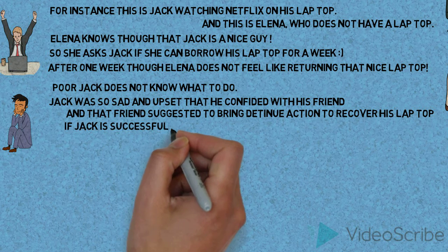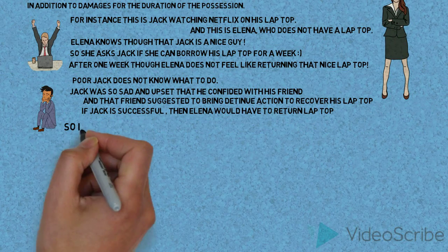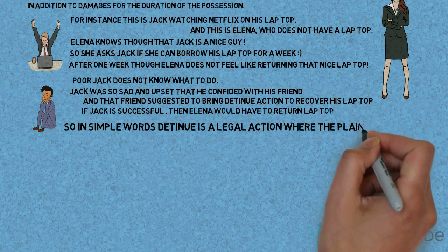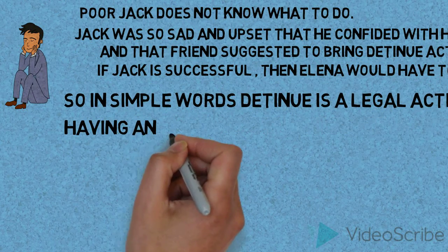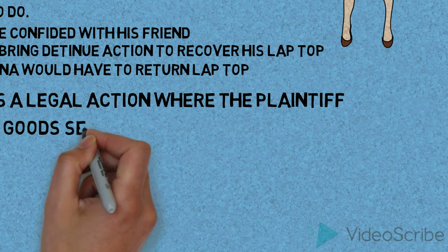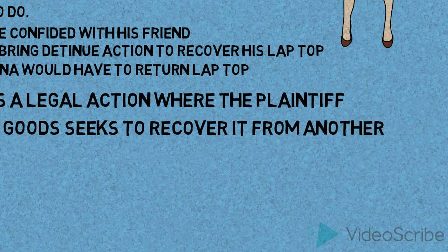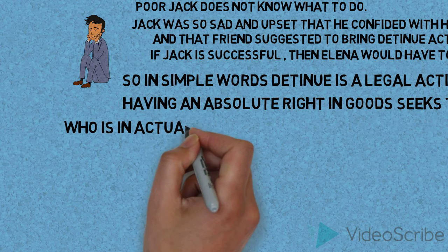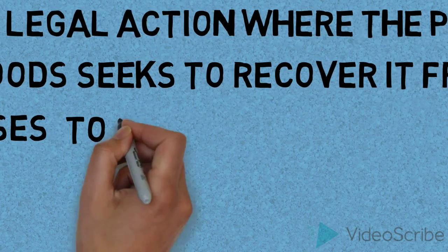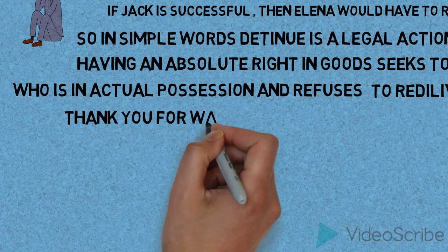If Jack is successful, then Elena would have to return the laptop. So in simple words, detenue is a legal action where the plaintiff, having an absolute right in goods, seeks to recover it from another who is in actual possession and refuses to re-deliver them. Thank you for watching, presented to you by Jack and Elena.